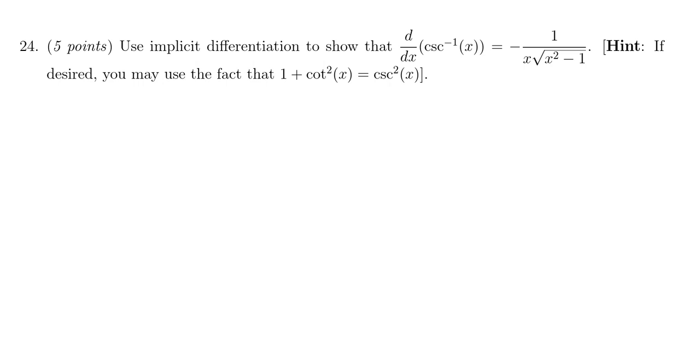So let's begin. We're going to write down our function we're trying to take the derivative of, y equals cosecant inverse of x. The reason we're going to do implicit differentiation is because although we might not know the derivative of the inverse cosecant, we can calculate the derivative of cosecant by switching to the inverse function. So cosecant of y is equal to x.